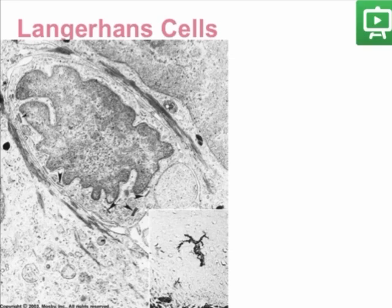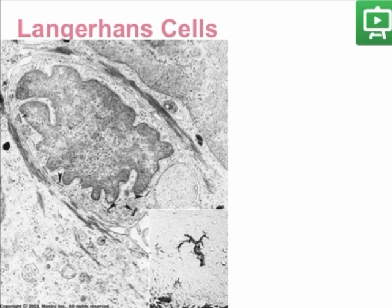Langerhans cells are antigen-presenting cells. They are also dendritic cells and have characteristic Birbeck granules, which can be seen as marked by the arrows. These granules are rod-shaped and have immunologic function. These cells with their dendrites can ingest bacteria and foreign antigens in the epithelium and present them to lymphocytes or the lymph nodes in the connective tissue. Therefore, they are migrating cells from the epithelium to the connective tissue or nearby lymph nodes.